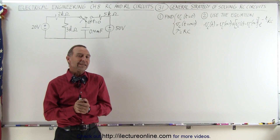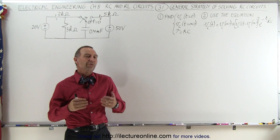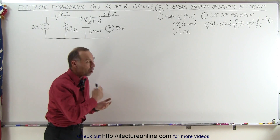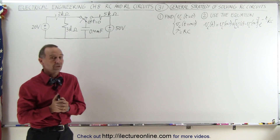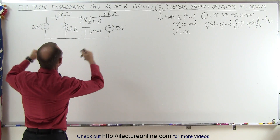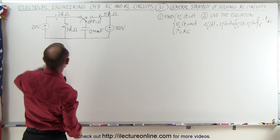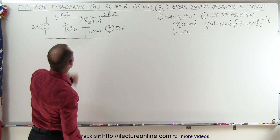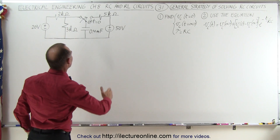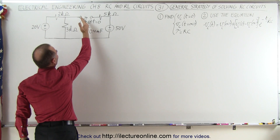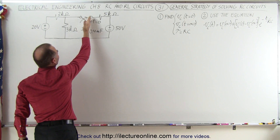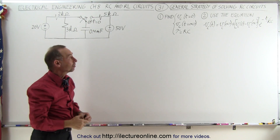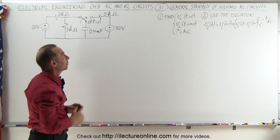Welcome to Electronline. Let's start reviewing the general methodology for solving RC circuits. Here we have a typical first order RC circuit with a few voltage sources, a capacitor, a few resistors, and at time equals zero the switch goes from the left to the right. The way to solve it is to follow these rules.